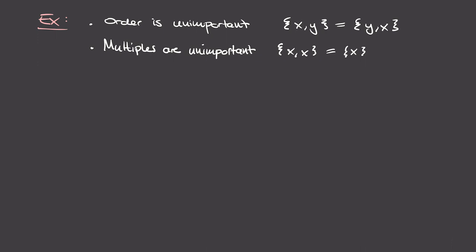An important consequence of the definition of equality of sets is that neither order nor multiplicity of elements matters. For instance, the set containing x and y is the same set as the set containing y and x. The reason these two sets are the same is because they contain exactly the same elements — any element in the left set is also in the right set, and conversely, and that's precisely the definition for sets to be equal.